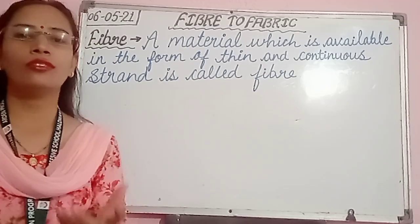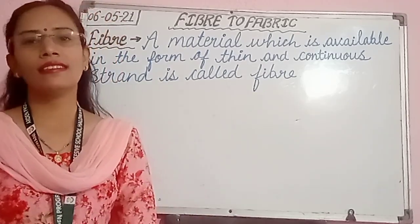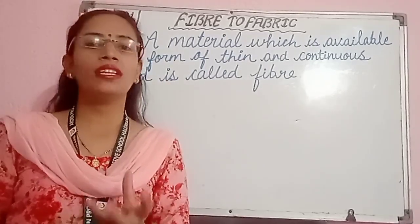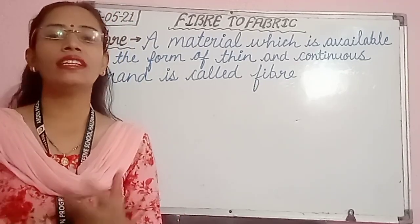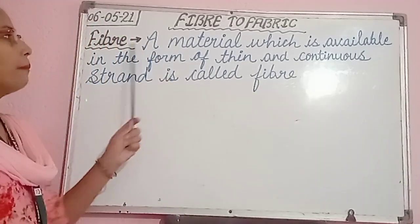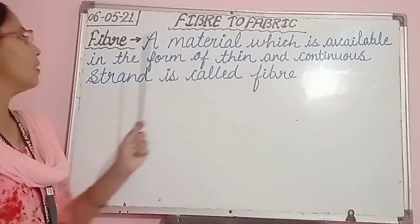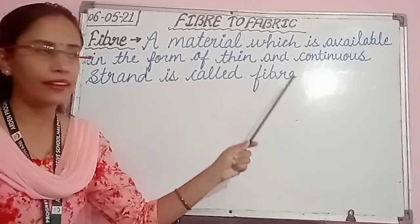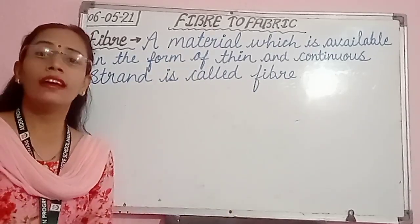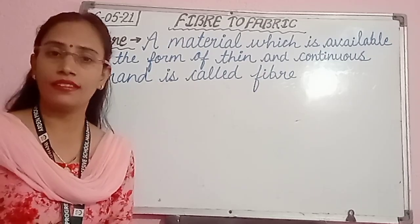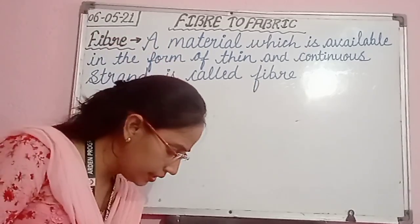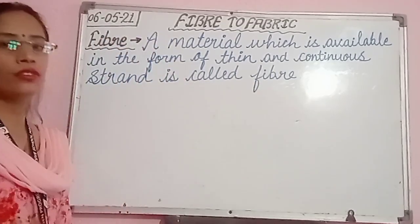This chapter you have already discussed in your class 6. So first of all I would like to ask you: what do you mean by fiber? How can you define fiber? Fiber can be defined as a material which is available in the form of thin and continuous strands. The thin and continuous strands are called fiber - they are very thin.